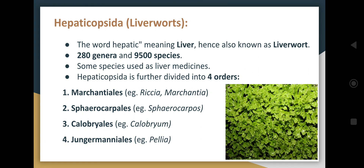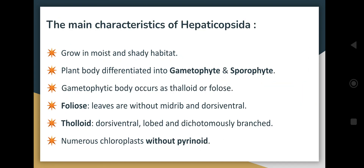The word 'hepatic' itself means liver, and hence Hepaticopsida is also known as liverworts. Some species are used as liver medicines. This class includes 280 genera and 9500 species, and is further divided into four orders: Marchantiales (examples: Riccia and Marchantia), Sphaerocarpiales, Calobryales, and Jungermanniales.